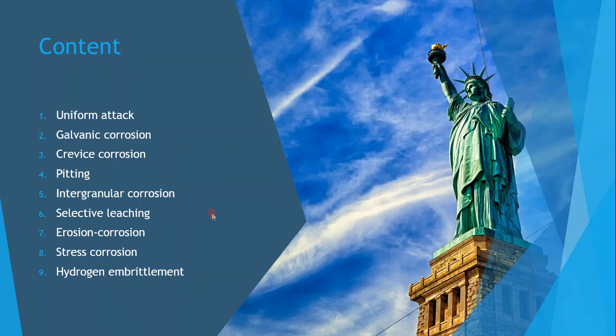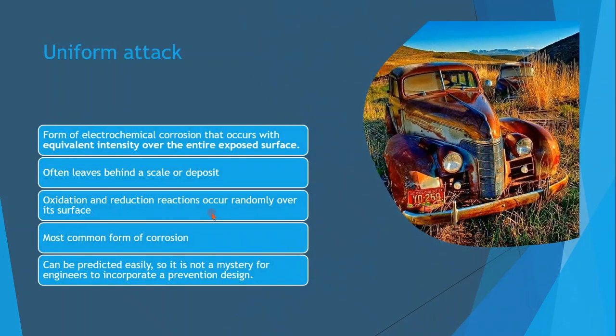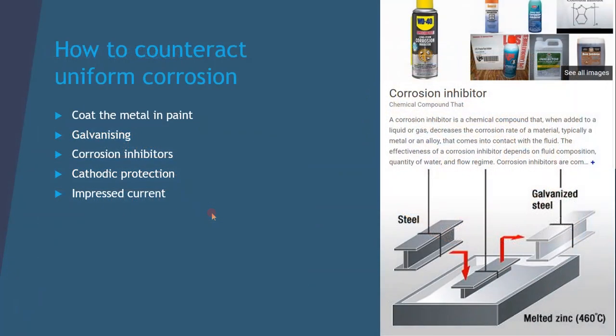Uniform attack is a form of electrochemical corrosion that occurs with equivalent intensity over the entire exposed surface, often leaving behind a scale or deposit. Oxidation and reduction reactions occur randomly all over the surface, and it is the most common form of corrosion. It can actually be predicted easily, so engineers can incorporate prevention design: coating the metal in paint, galvanizing it, using corrosion inhibitors, cathodic protection, or an impressed current.